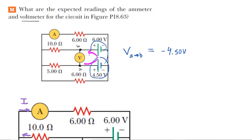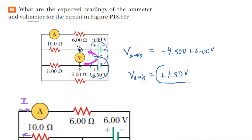Continuing our journey in a counterclockwise fashion through the loop, we encounter another battery, but this time we would be moving from the negative to the positive plate. That will be a positive change in electric potential, so we write that as positive 6 volts. After traveling past that battery, we encounter point B and have traversed the loop. Adding the right-hand side together, we get positive 1.5 volts — the correct answer for the reading of the voltmeter.